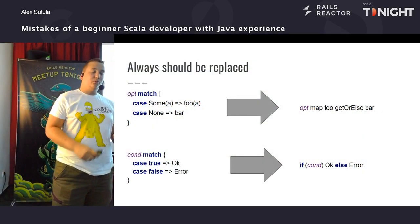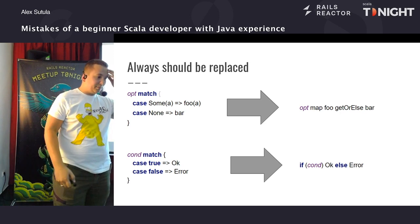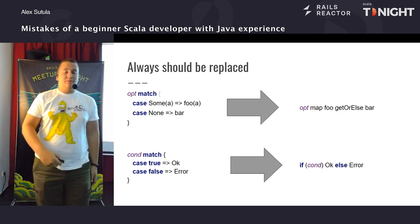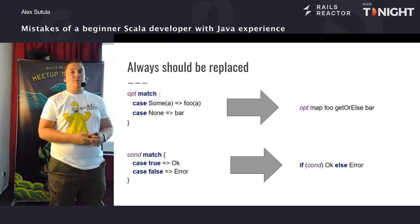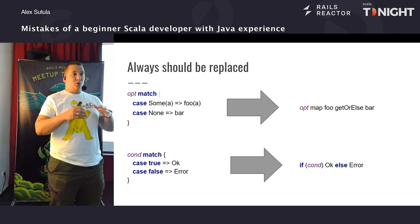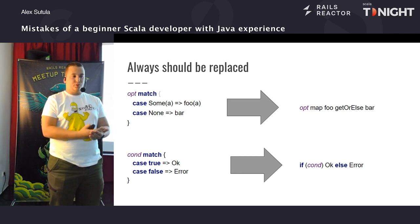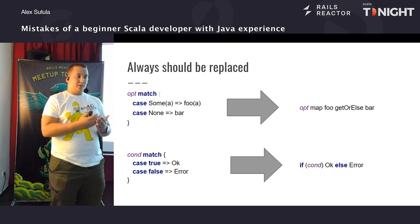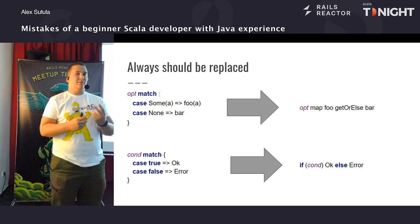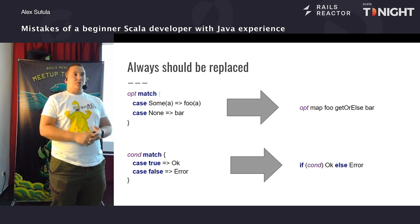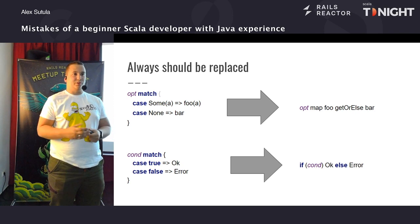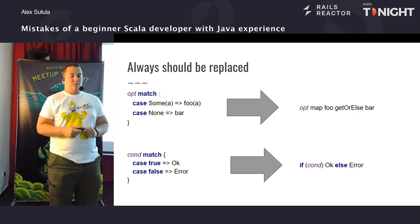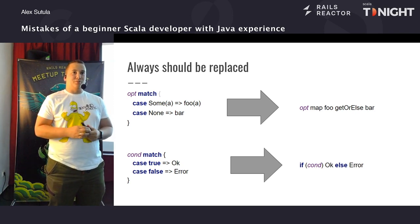Тобто бувають рідкі випадки, коли у вас перформанс є важливим. Дякую. Це все потрібно вимірювати. Якщо вони застосували таку штуку, то, скоріше всього, так і дійсно є. Насправді, Option присвячений тому, що змінна може не бути — і це його головна ціль: показати те, що у нас є якась змінна, і в неї є два стани.